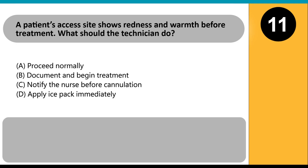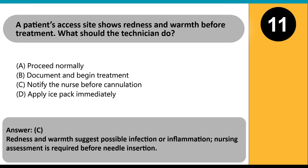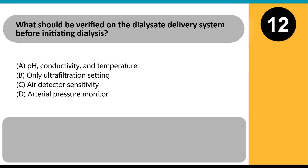A patient's access site shows redness and warmth before treatment. What should the technician do? A. Proceed normally. B. Document and begin treatment. C. Notify the nurse before cannulation. D. Apply ice pack immediately. Answer C. Redness and warmth suggest possible infection or inflammation. Nursing assessment is required before needle insertion.